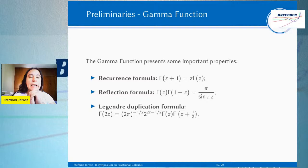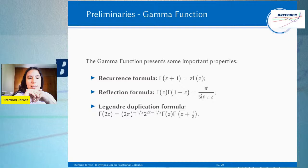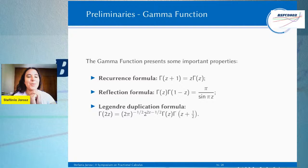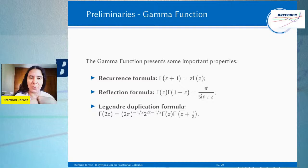Além disso, a função gama tem propriedades importantes. A primeira que nos vem à cabeça é essa relação de recorrência: Γ(z+1) = z · Γ(z). Isso remonta de imediato ao fatorial — o fatorial é exatamente isso. A gente consegue decompor o fatorial nos fatoriais das suas parcelas. Inclusive, creio eu que seja daí que vem o nome 'fatorial'. Essa é a fórmula de recorrência, a mais imediata e não menos importante.